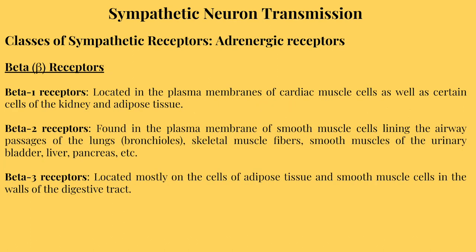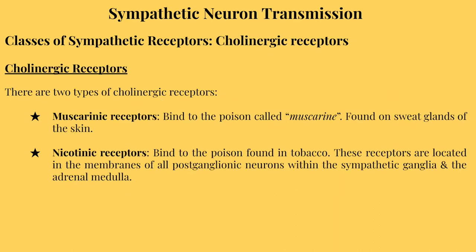There are three types of beta receptors: beta-1, beta-2, and beta-3. Beta-1 receptors are found in the plasma membranes of cardiac muscle cells, certain kidney cells, and adipose tissue. Beta-2 receptors are found in the plasma membrane of smooth muscle cells lining the airway passages of the lungs, on skeletal muscle fibers, smooth muscles of the urinary bladder, liver, pancreas, and more. Beta-3 receptors are located mostly on adipose tissue cells and smooth muscle cells in the walls of the digestive tract. Cholinergic receptors have two main types: muscarinic and nicotinic. Muscarinic receptors bind to the poison muscarine; nicotinic receptors bind to the poison found in tobacco. These receptors are found in the membranes of all postganglionic neurons within the sympathetic ganglia and adrenal medulla.